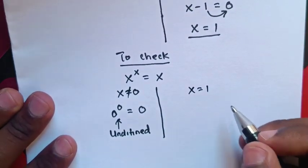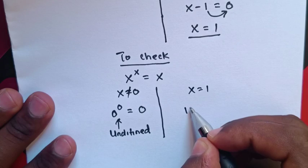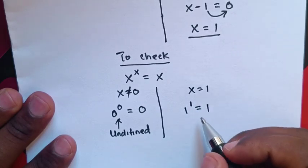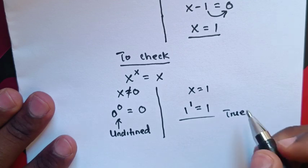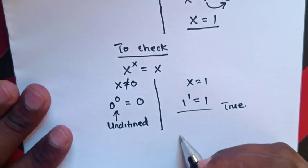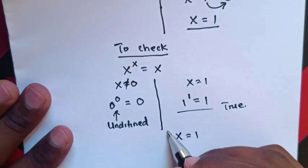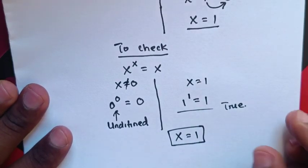Now, from x = 1, when we substitute it will be 1^1 = 1. So, 1^1 is equal to 1. So, it's true for the value of x = 1. So, this is the correct answer.